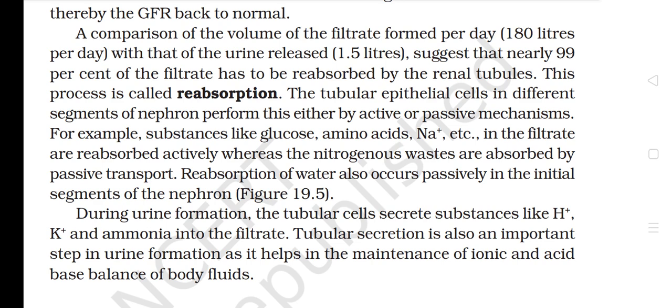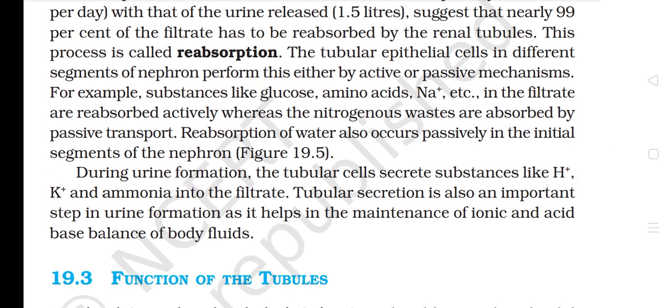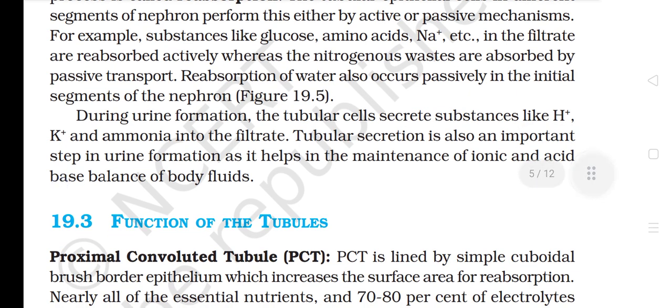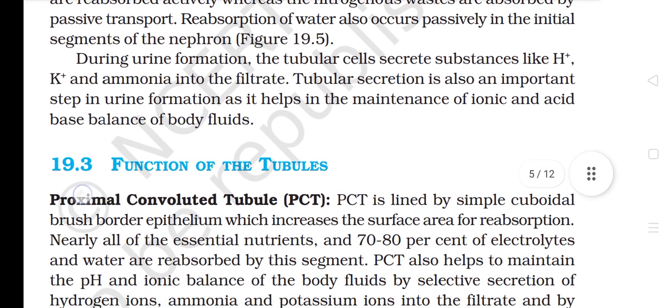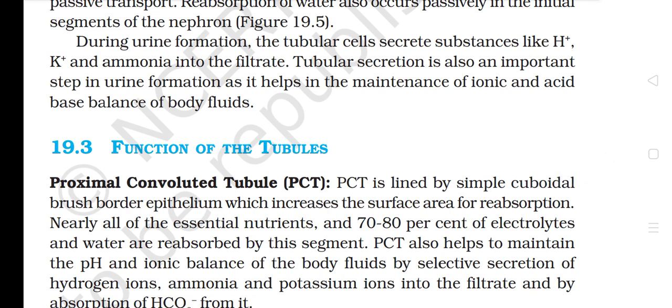Comparison of the volume of filtrate formed per day (180 liters) with that of urine released (1.5 liters) suggests that nearly 99% of the filtrate has to be reabsorbed by the renal tubules — this is called reabsorption. Tubular epithelial cells perform reabsorption by active or passive mechanisms. Substances like glucose, amino acids, and Na+ are reabsorbed actively, whereas nitrogenous waste are absorbed by passive transport. Water is also reabsorbed passively in the initial segments. During urine formation, tubular cells secrete substances like H+, K+, and ammonia into the filtrate — tubular secretion helps maintain ionic and acid-base balance of body fluids.